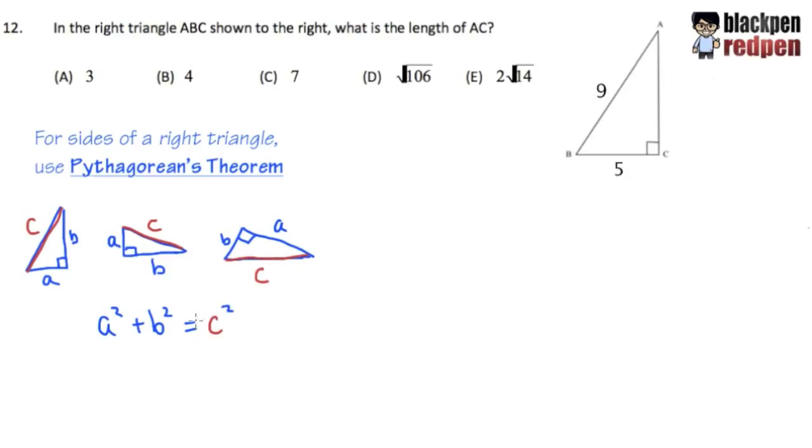So, this is the equation that we can always set up whenever we are dealing with the sides of a right triangle, just like the question right here. To finish this up, as a good habit when we are using the Pythagorean theorem, we are going to first label the C, namely the hypotenuse, which means the longest side of the right triangle.